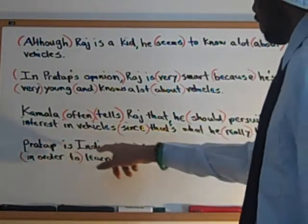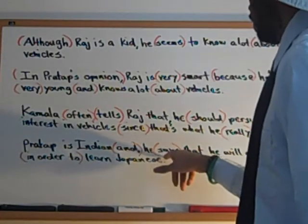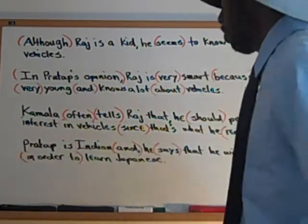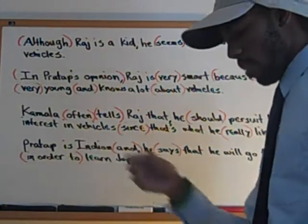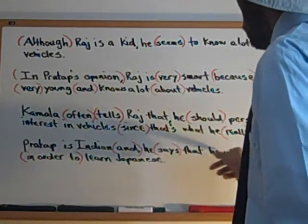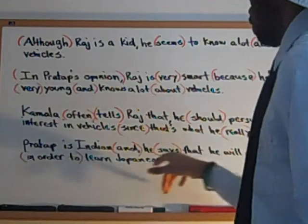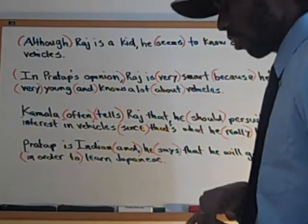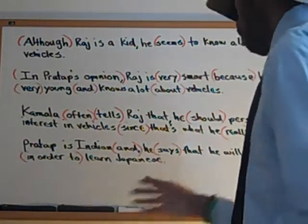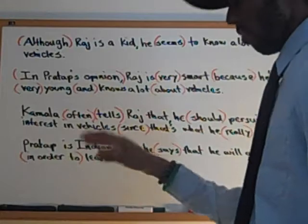'Pratap is Indian, and he says that he will go to Japan in order to learn Japanese.' 'And,' 'says,' and 'in order to' are keywords. Pratap being Indian was mentioned in the dialogue, so I used that. He didn't actually say he'd go to Japan, but I used 'Japanese' because a Japanese car was mentioned, and I decided to connect it to the Japanese language. It's just something I made for my own exercise.